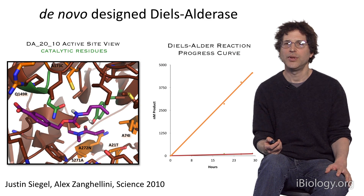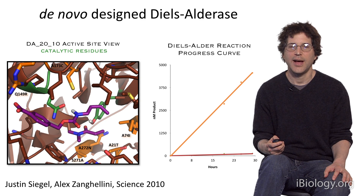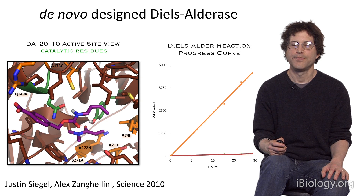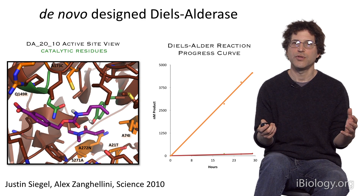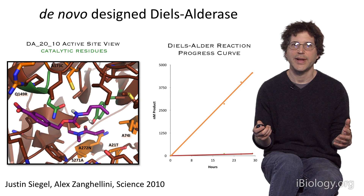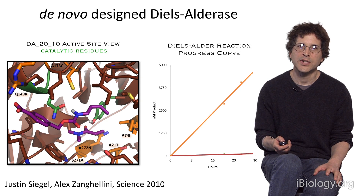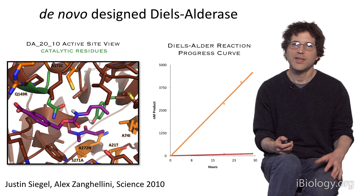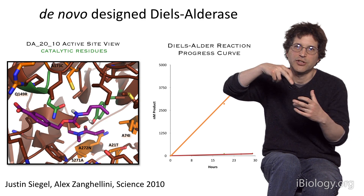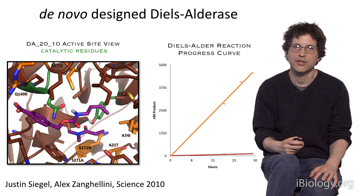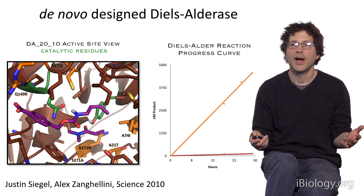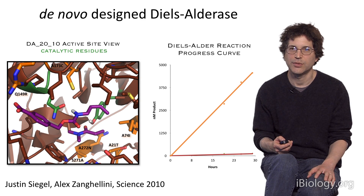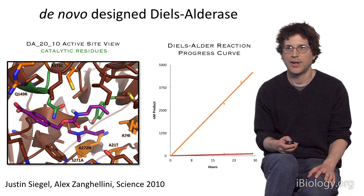The final example concerns protein design. For many years we've been designing new enzyme catalysts — designing new proteins to catalyze reactions which aren't catalyzed by naturally occurring proteins. We do this by designing a protein that holds the constituent chemicals in just the right orientation for the chemical reaction to occur. When we make these proteins in the lab and they're successful, they actually catalyze the chemical reaction, as shown on the panel on the right.